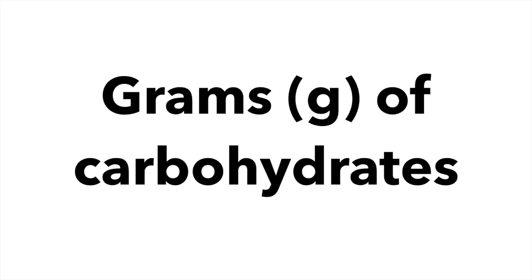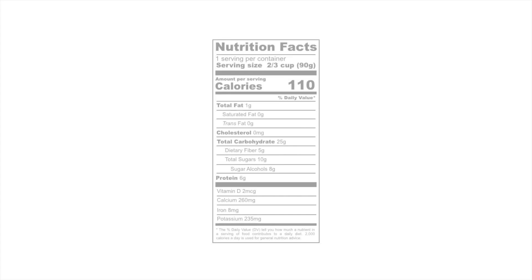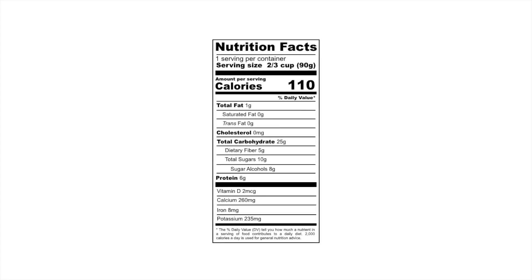The easiest way to find this is the nutrition label on the back of most foods. We will go over how to find the amount of carbohydrates in food without nutrition labels later on. There are several things that you need to look out for on a nutrition label to determine how many grams of carbohydrates are in the food.